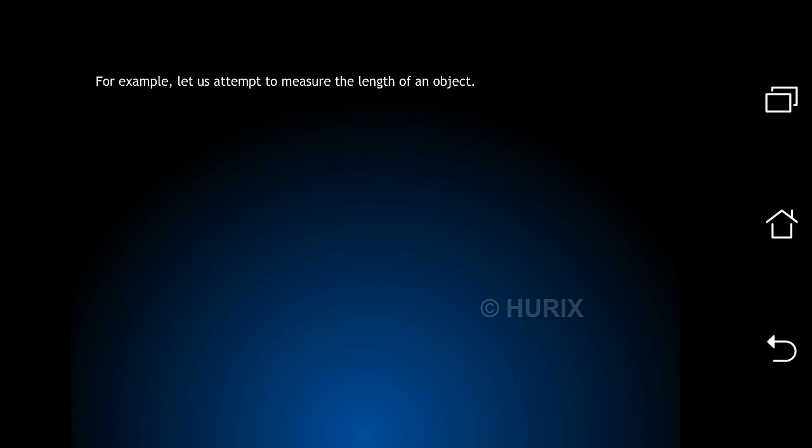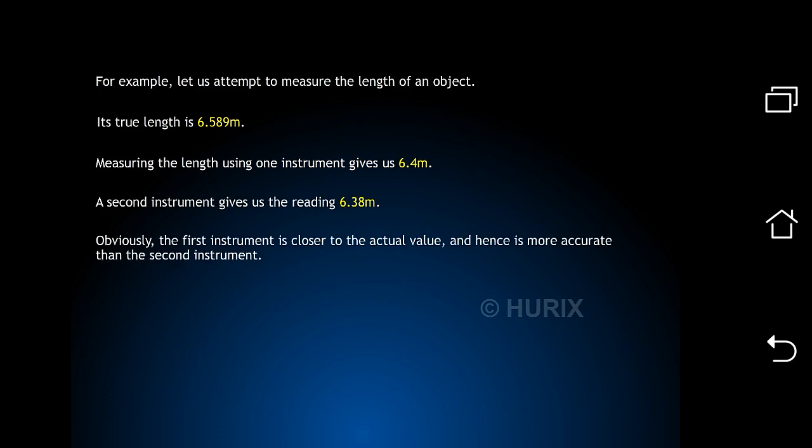For example, let us attempt to measure the length of an object. Its true length is 6.589 meters. Measuring the length using one instrument gives us 6.4 meters. A second instrument gives us the reading 6.38 meters. Obviously, the first instrument is closer to the actual value and hence is more accurate than the second instrument.